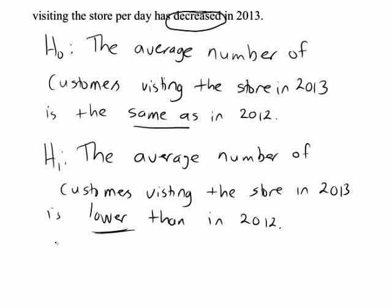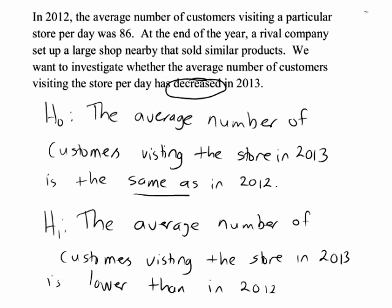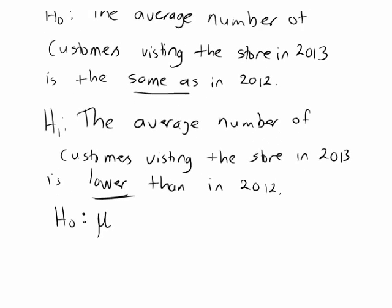How do we write these in symbols? According to the null hypothesis, in 2013 the population mean mu is still the same as the previous year, which was 86. Therefore H0 says mu equals 86. H1, the hypothesis of a decrease, says mu is less than 86. When H1 has the form mu less than some number — or mu greater than some number — we're looking at a possibility in one direction only. For that reason, a hypothesis test of this type is sometimes called a one-tailed or directional hypothesis test.